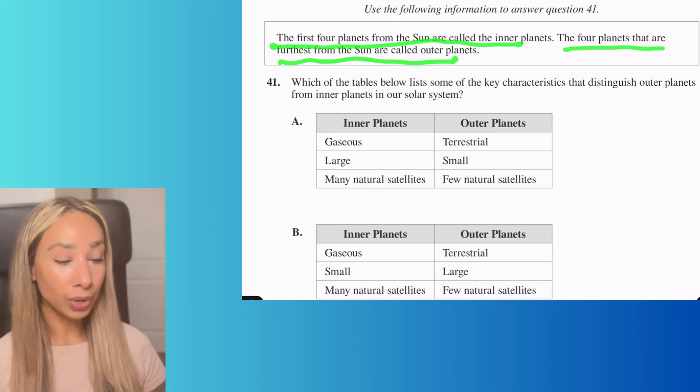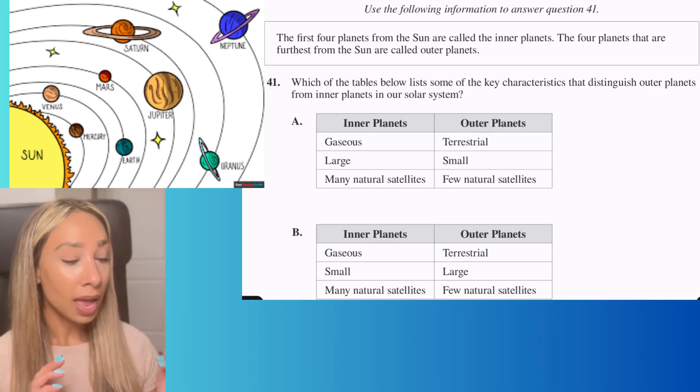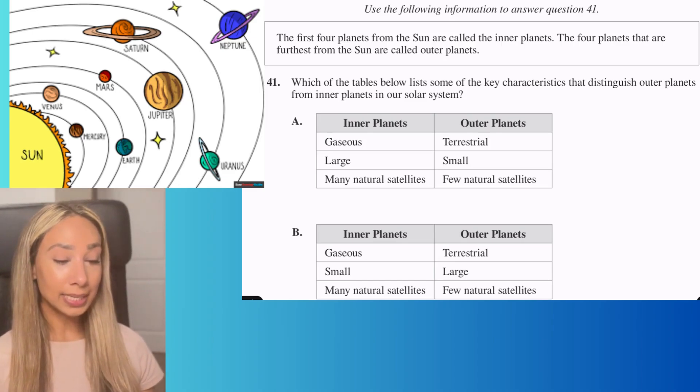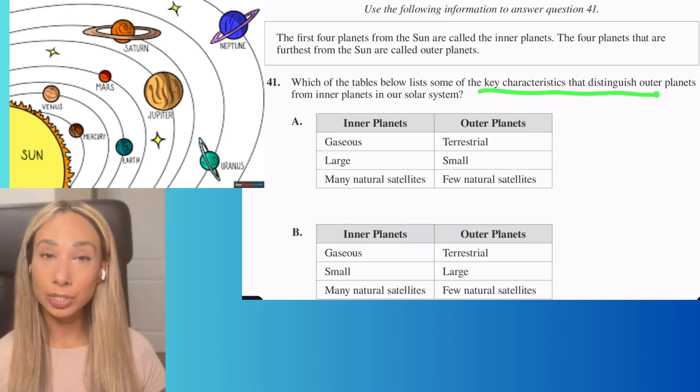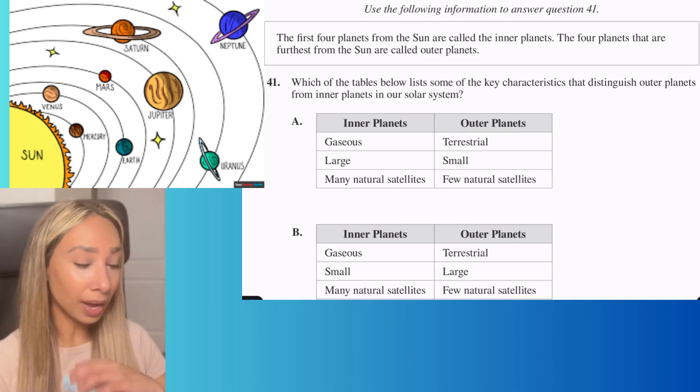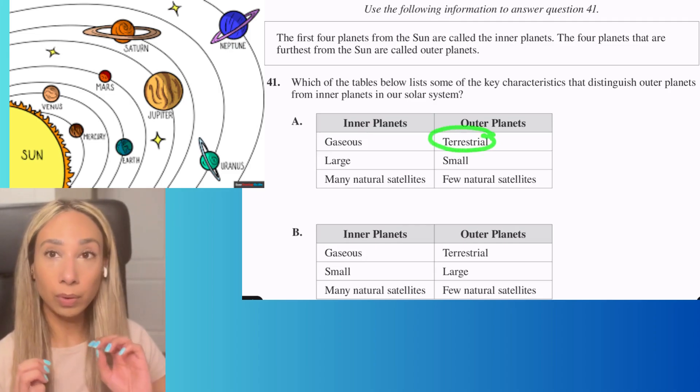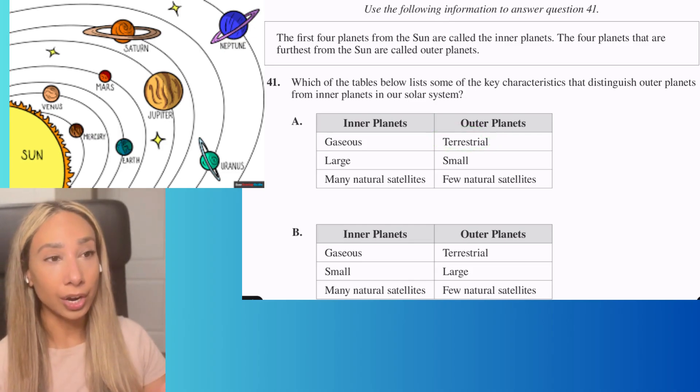If you know your order of your solar system, you're already thinking which planets are closer to the Sun and which ones are farther. Now we're looking at key distinctive characteristics that help distinguish one planet from another. One of the things I notice right away is terrestrial planets.